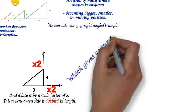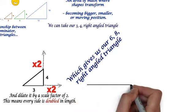That gives us a different triangle, and in fact, it gives us our six, eight right-angled triangle.